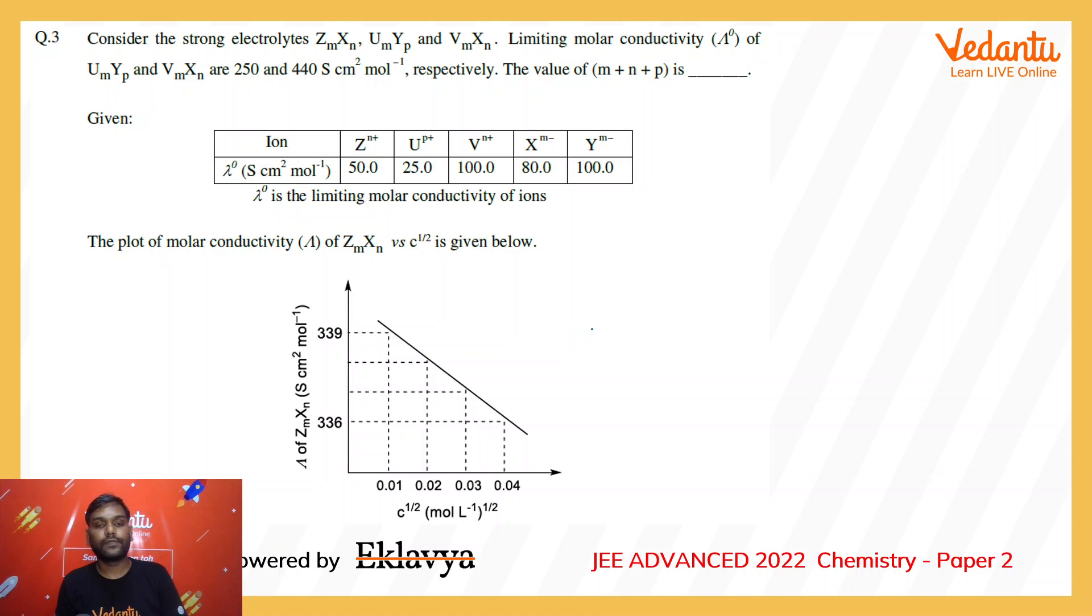The next question is from electrochemistry. Consider the strong electrolytes Z_M X_N, U_M Y_P, and V_M X_N. The limiting molar conductivity of the first two electrolytes are given as 250 and 440, and we have to find the value of M + N + P.